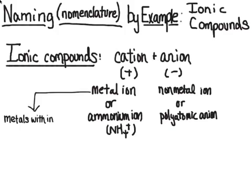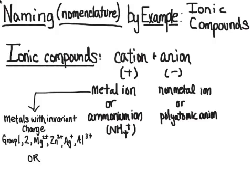Let's take a look at metals with invariant charge versus metals that have varying charge. These give us two categories of naming ionic compounds. Under the umbrella of ionic compounds there are two sets of rules — one for metals with invariant charge, which includes group one, group two, and then magnesium, zinc, silver, and aluminum. All of those have invariant charges.